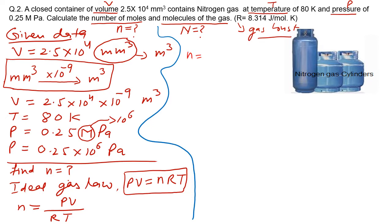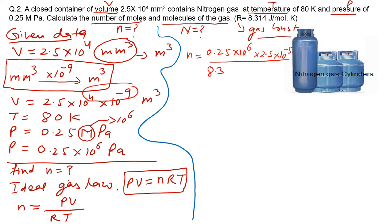Substituting: n = (0.25 × 10⁶ Pa × 2.5 × 10⁻⁵ m³) / (8.314 × 80). The exponents combine: 10⁴ × 10⁻⁹ = 10⁻⁵. After calculation, the value of n = 0.0093 moles. This is the number of moles in the gas.